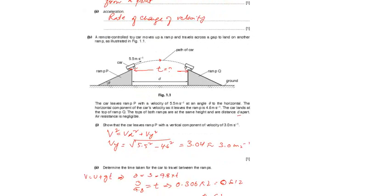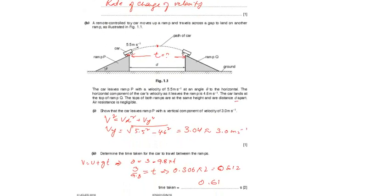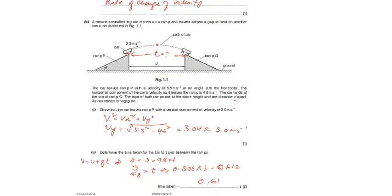So show that the car leaves from ramp P with vertical component of velocity 3 meters per second. We have the vertical component and the horizontal component, and we know that in projectile motion, the horizontal component remains unchanged. As it leaves, we know the horizontal velocity. So from Vx² + Vy², we will find out the vertical component of the velocity.